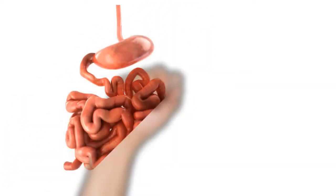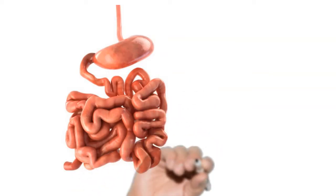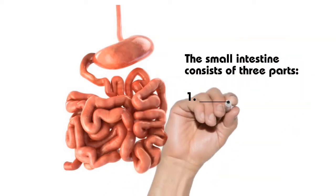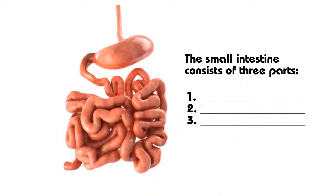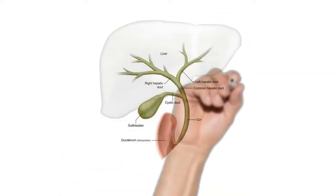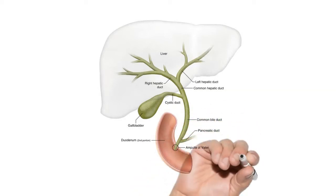Chyme exits the stomach through the pyloric sphincter and enters the small intestine, the major site of nutrient absorption. The small intestine consists of three parts: the duodenum, jejunum, and ileum. Bile from the liver and digestive enzymes from the pancreas empty into the duodenum to aid in digestion. Absorbed nutrients pass from the lumen of the small intestine into blood and lymph.